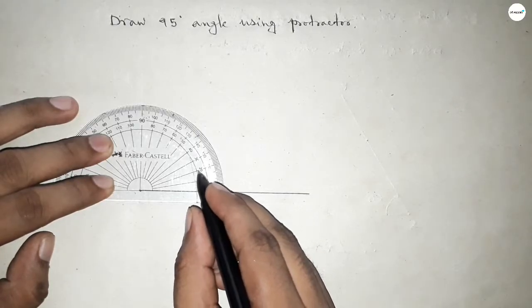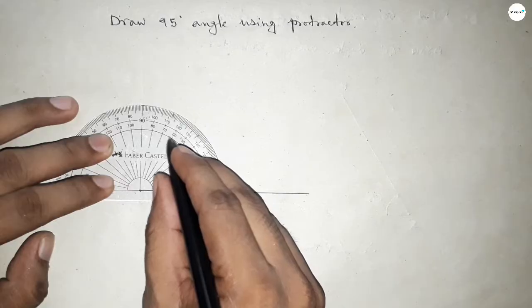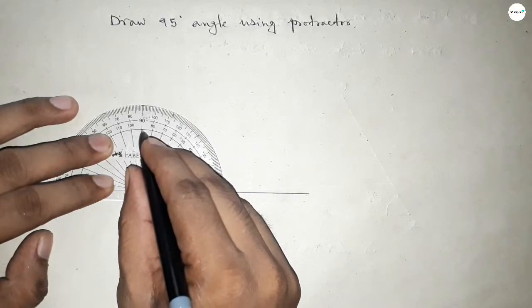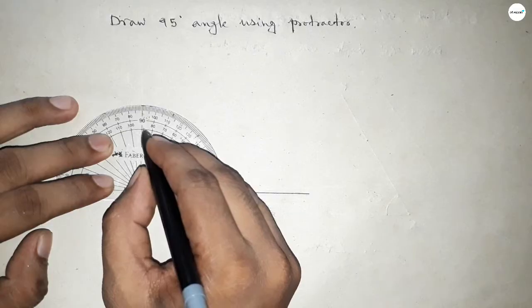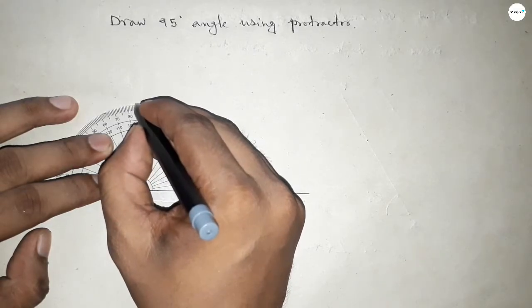This is 0, 10, 20, 30, 40, 50, 60, 70, 80, 90, and this is 100. So between 90 to 100 we can get 95-degree angle.